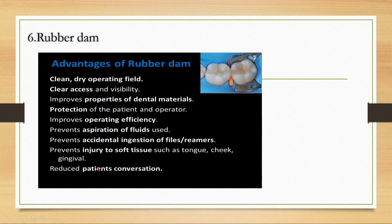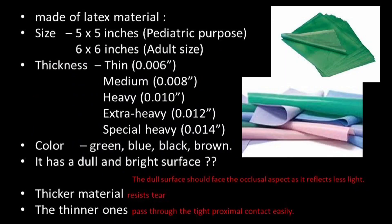Rubber dam also prevents injury to soft tissues such as the tongue, cheek, and gingivae, and reduces patient conversation. It is made of latex material with sizes of 5×5 or 6×6 inches, in thicknesses: thin, medium, heavy, extra-heavy, and special heavy. Colors can be green, blue, black, or brown. The dull surface should face the occlusal aspect as it reflects less light.